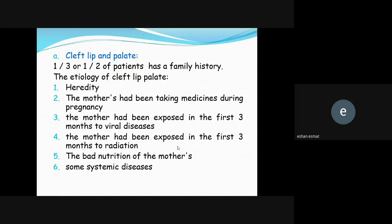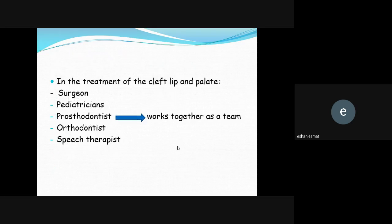Cleft lip and palate: one third to one half of patients have a family history. The etiology of cleft palate includes: heredity, the mother taking medicine during pregnancy, mother being exposed in the first three months to viral diseases, mother exposed in the first three months to radiation, bad nutrition of the mother, and some systemic diseases. This etiology is very important — it is a common exam question. Treatment of cleft lip and palate requires a team: surgeon, pediatrician, prosthodontist, orthodontist, and speech therapy.